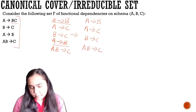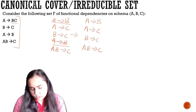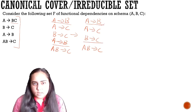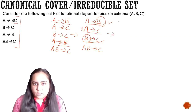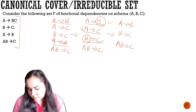At this point I can apply the transitivity rule. I have A→B and B→C — both share B — so I can generate A→C using these two. Therefore the dependency A→C is not required since it can be derived from A→B and B→C. Removing it leaves: A→B, B→C, and AB→C — three dependencies.